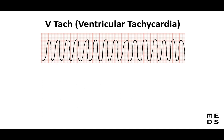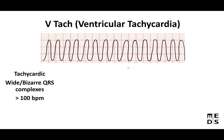Now VTach — ventricular tachycardia. It's tachycardic with wide, bizarre QRS complexes — more than three small boxes wide. The rate is over 100 BPM. This is life-threatening because VTach can deteriorate into VFib and then cardiac arrest. If you see this, you want to fix it immediately.